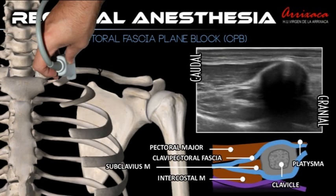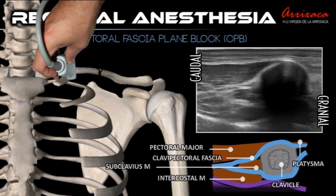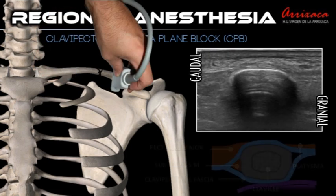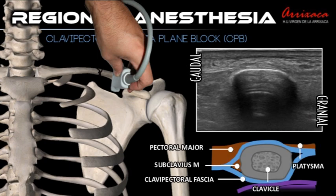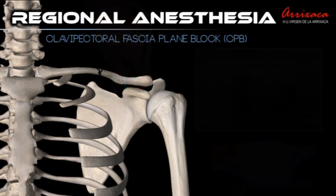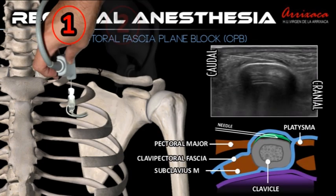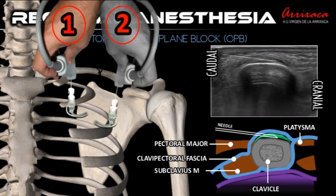The ultrasonographic probe is placed on the anterosuperior border of the clavicle on the medial and lateral side to the fracture. The position of the probe will avoid injecting over the insertion of the pectoralis major, as it will affect the diffusion of the local anesthetic.